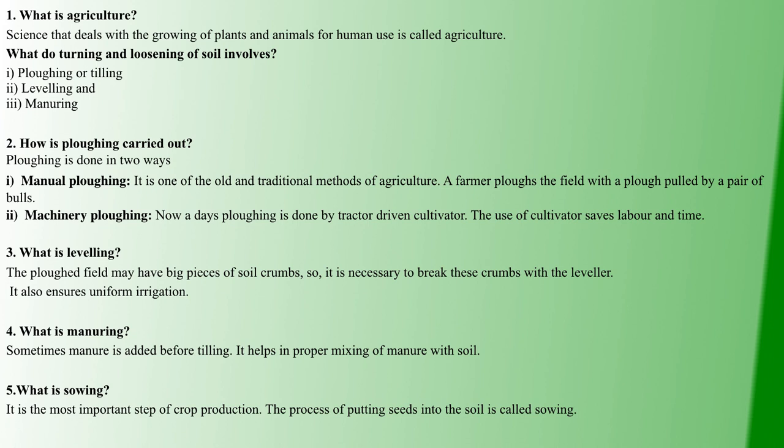Second question: How is Plowing carried out? Plowing has two methods. One is Manual Plowing, second is Machinery Plowing. Manual plowing is one of the old and traditional methods. In the old times, two bulls used to be used to till the soil. That is Manual Plowing.